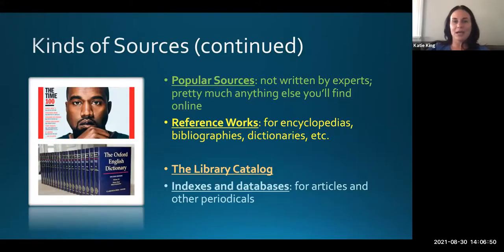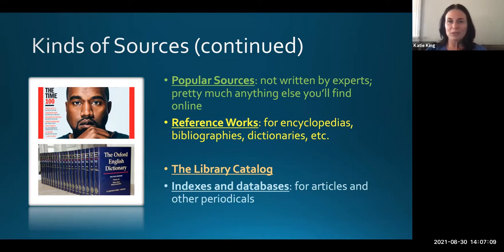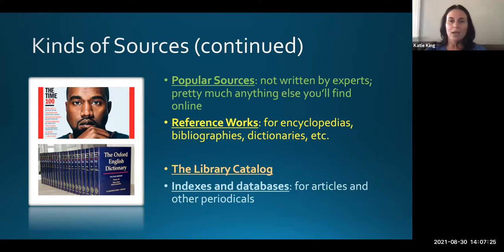We also have popular sources — these aren't written by experts. Pretty much anything you find on Google, like a Time Magazine article or Psychology Today — those might sound like they have some credibility behind them, but really they're popular sources. Any sort of glossy magazine is not trying to further the complex pursuit of knowledge — they're trying to sell you stuff. So you want to shy away from using popular sources, because that in and of itself creates a bias.